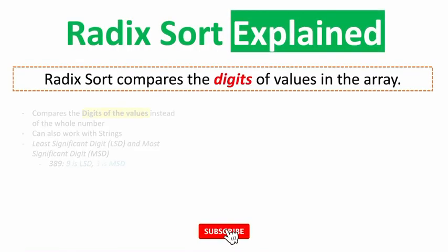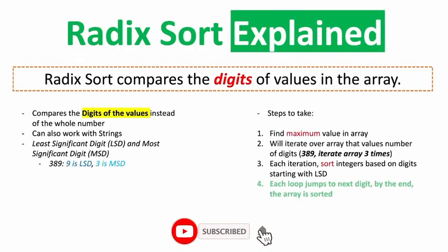Hey coders, welcome to another sorting algorithm. Today we're going over radix sort. The difference between this and other algorithms you've probably been through so far is that this compares the digits of the values in the array — not the whole integer value if you're sorting integers, or the whole string if you're doing strings. It's the digits or characters of each of those values in the array.